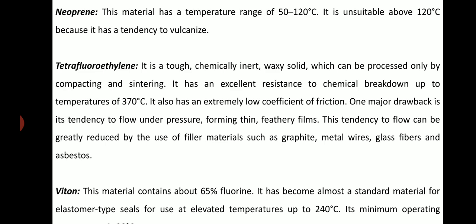Neoprene: this material has a temperature range of minus 50°C to 120°C. It is unsuitable above 120°C because it has a tendency to vulcanize. Tetrafluoroethylene (PTFE): it is a tough, chemically inert, waxy solid which can be processed only by compacting and sintering. It has excellent resistance to chemical breakdown up to temperatures of 370°C and an extremely low coefficient of friction. One major drawback is its tendency to flow under pressure, forming thin feathery films. This tendency to flow can be greatly reduced by the use of filler materials such as graphite, metal wires, glass fibers, and asbestos.